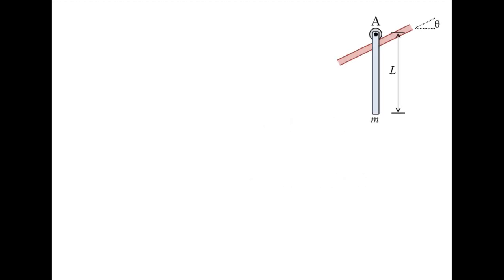A slender rod of length L and mass M has a roller attached at point A. The rod is released from rest in a vertical position, with the roller on a surface that is inclined at an angle theta. At this instant, what is the acceleration of point A, and what is the angular acceleration of the rod, alpha?